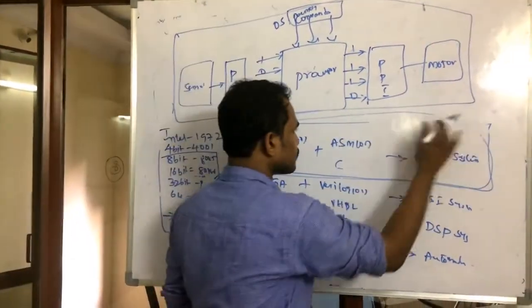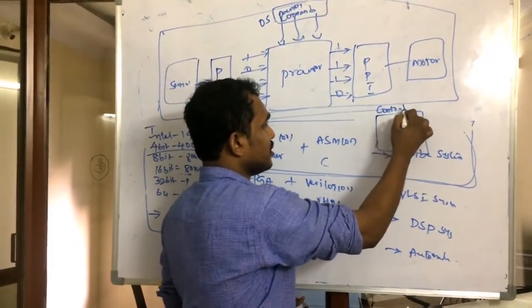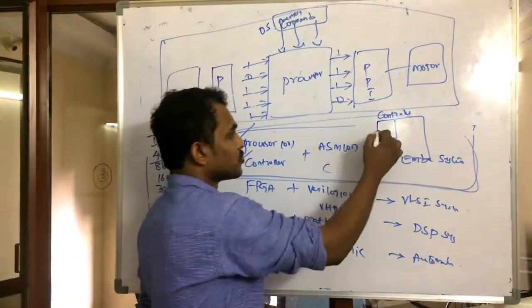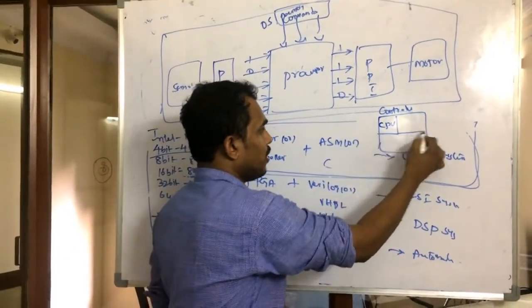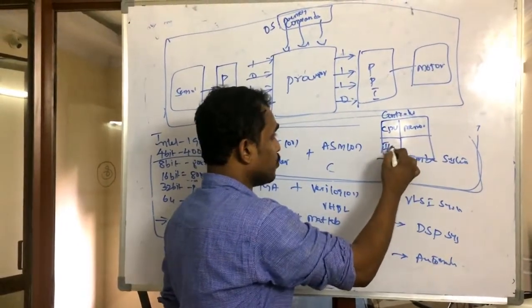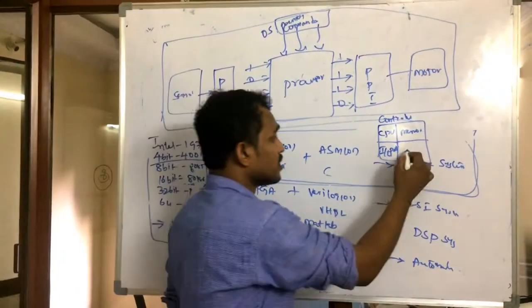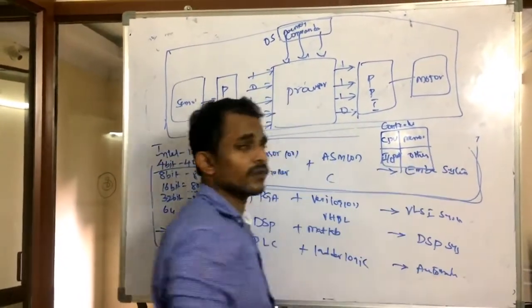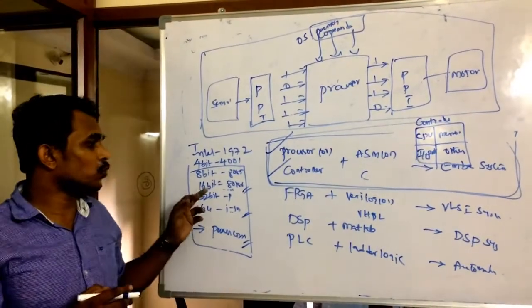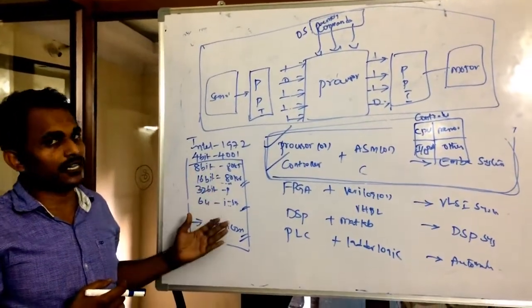That's why these people introduced one more programmable device by integrating all these things on a single chip. That's what your controller. The controller becomes one chip solution - they embedded inside one processor as CPU, some memory, and they integrated some I/O ports for connecting input-output peripherals, and some other features. Because always the electronics people will concentrate on three important parameters: cost, size, and power consumption.